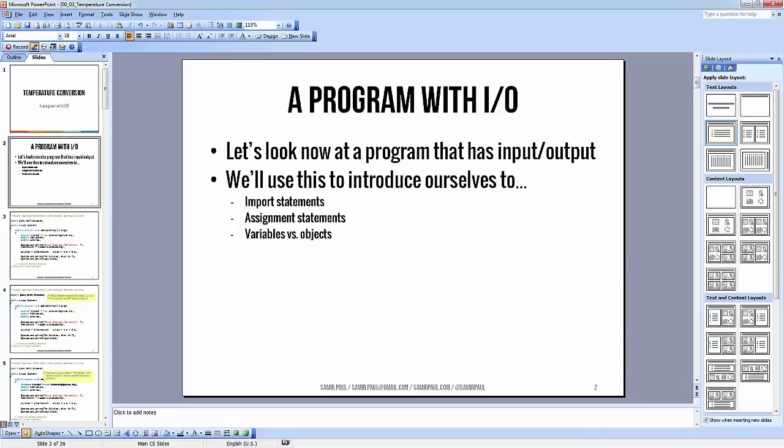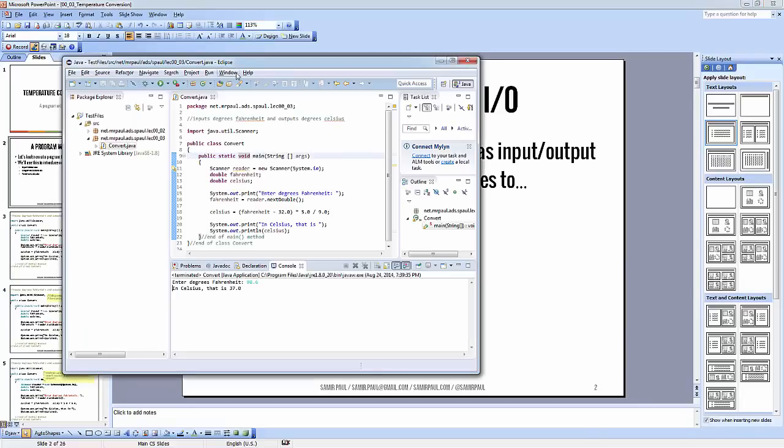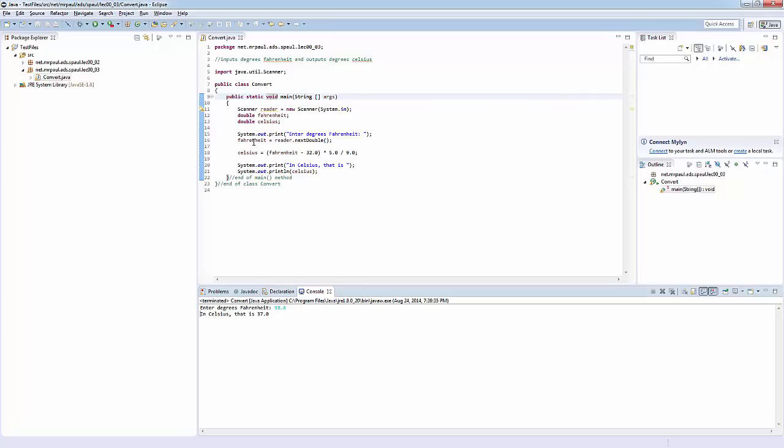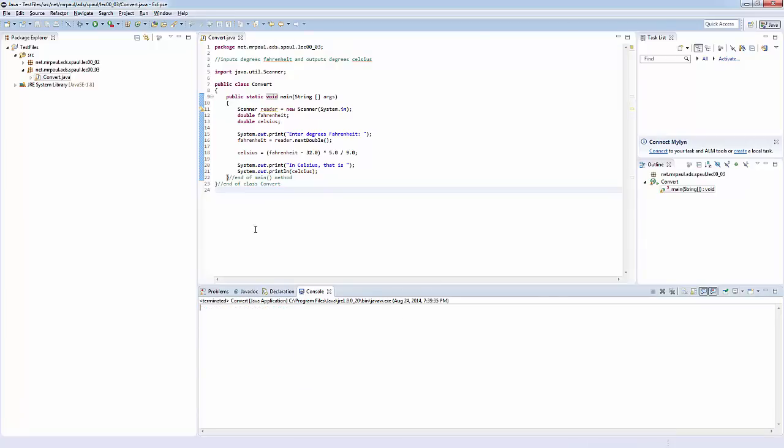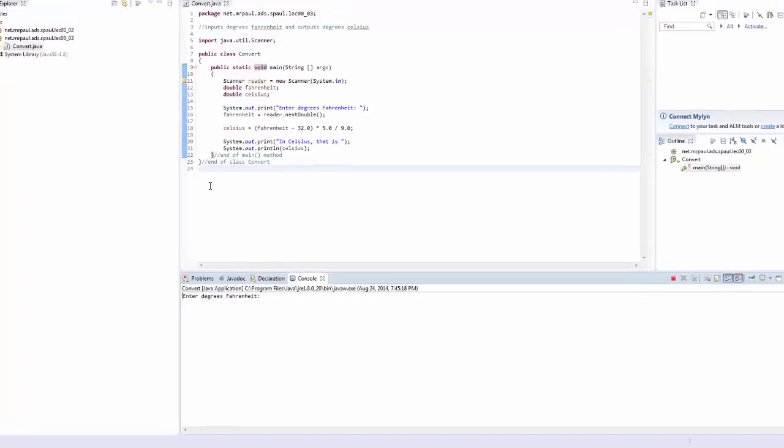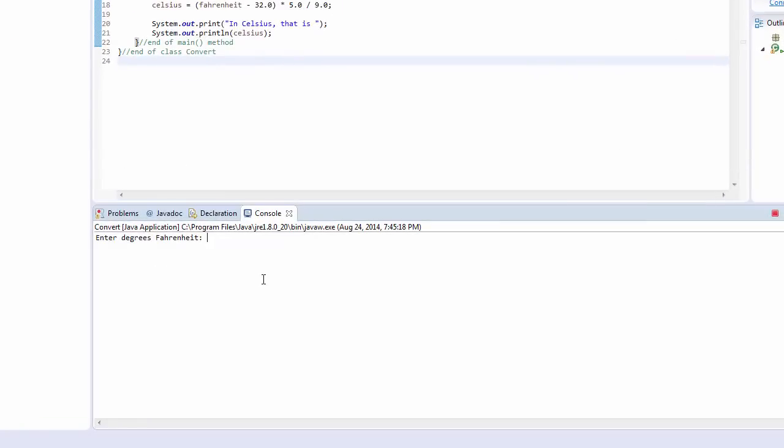But first, before we do anything, let's actually just stop and look at the program. This code is on the class website. You can download it, pull it into Eclipse by importing it into a new package, and then you can actually run it. So let's actually take a look real quick and see what happens when we do run this. So click run. Enter degrees Fahrenheit. Okay, we'll say 32 degrees. Okay, that's zero degrees Celsius.